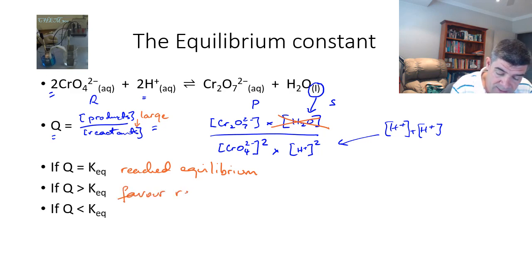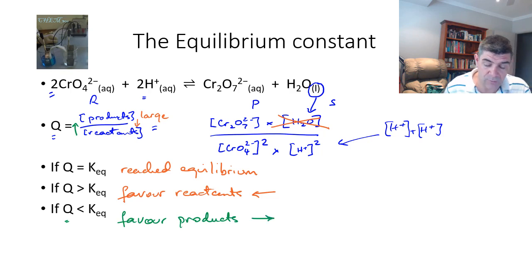And likewise if the reaction quotient is lower than the equilibrium constant then that means that the number on the top needs to become bigger which means we need to shift in the other direction and therefore this is going to favor the products and shift to the right.